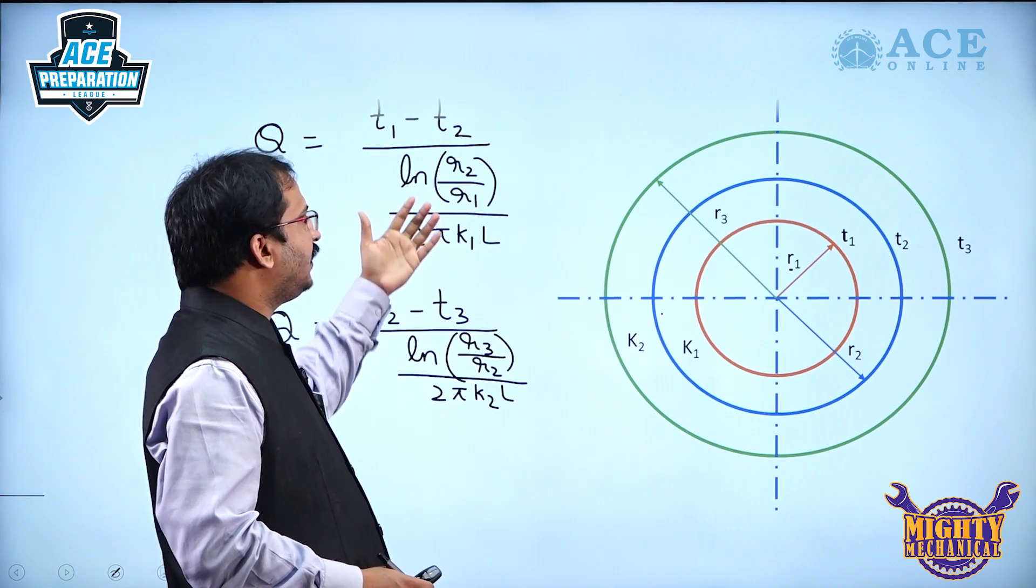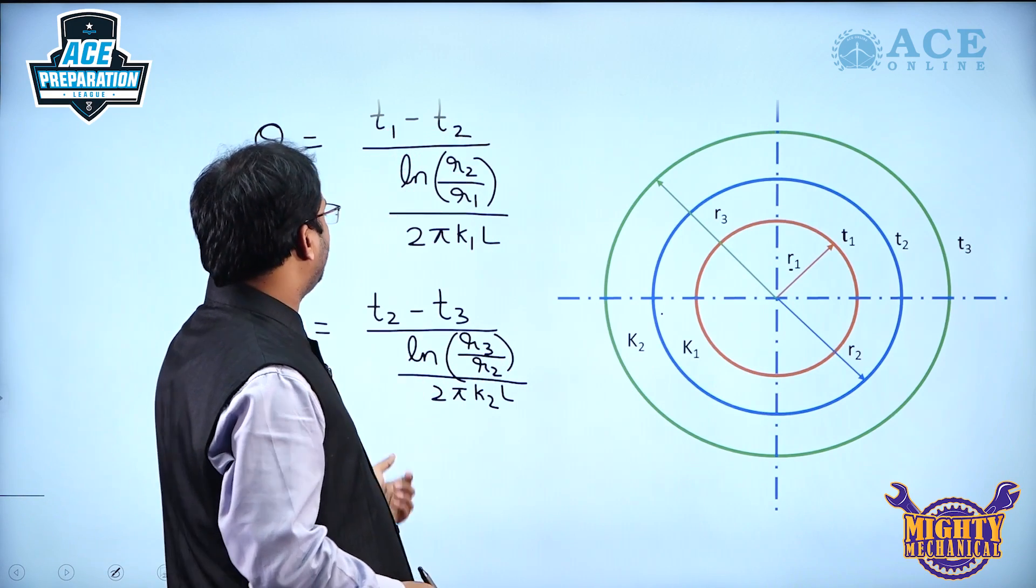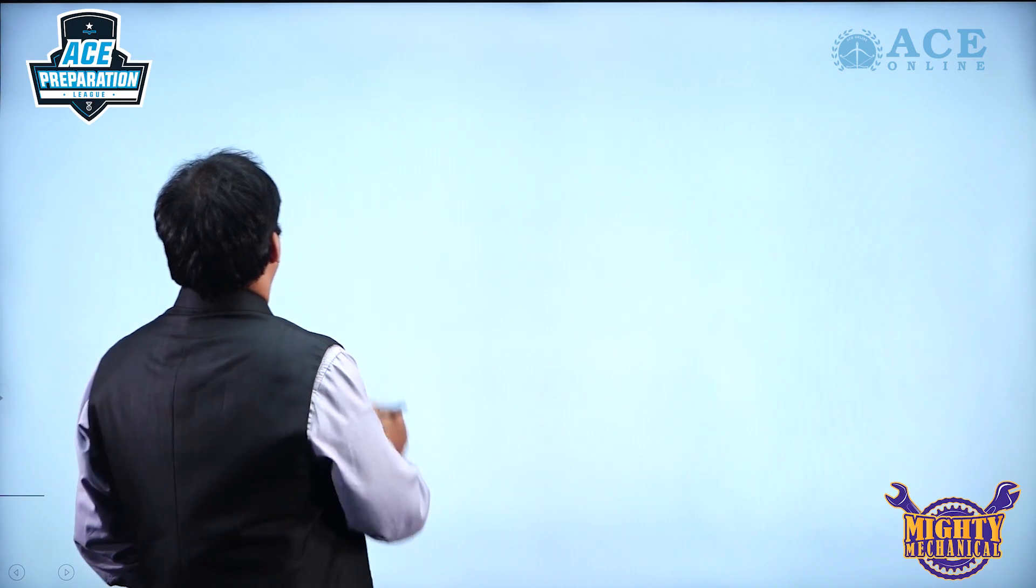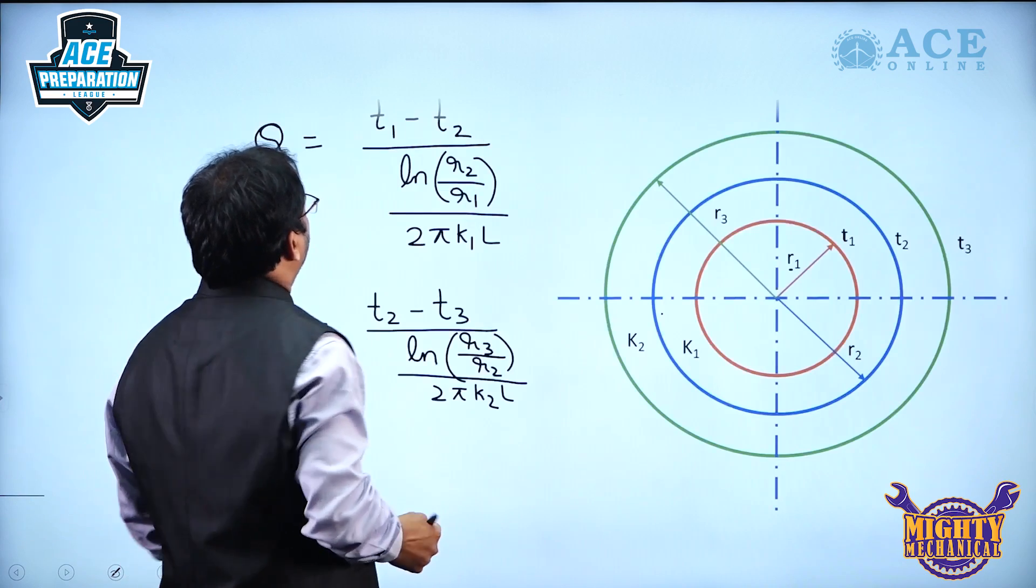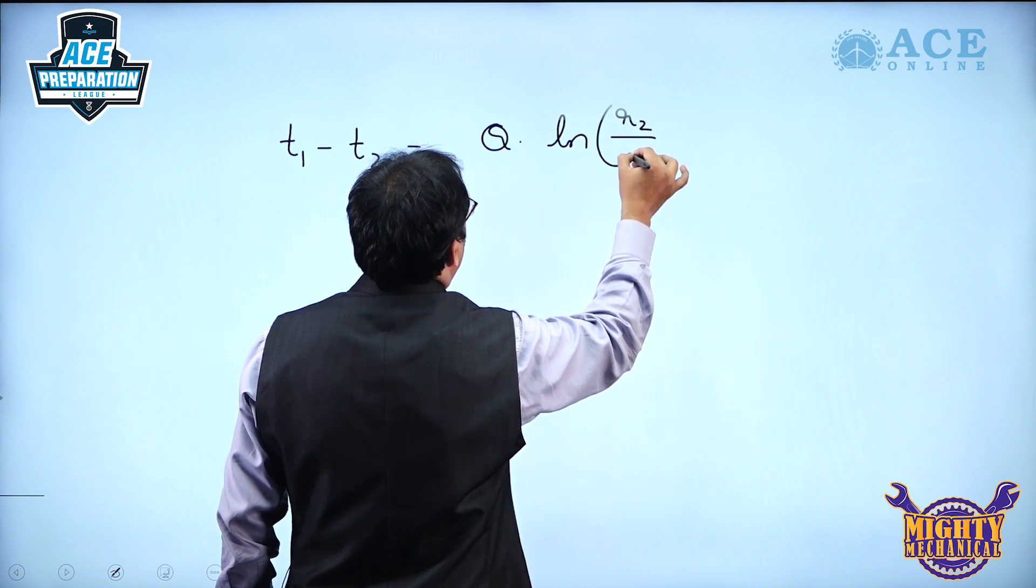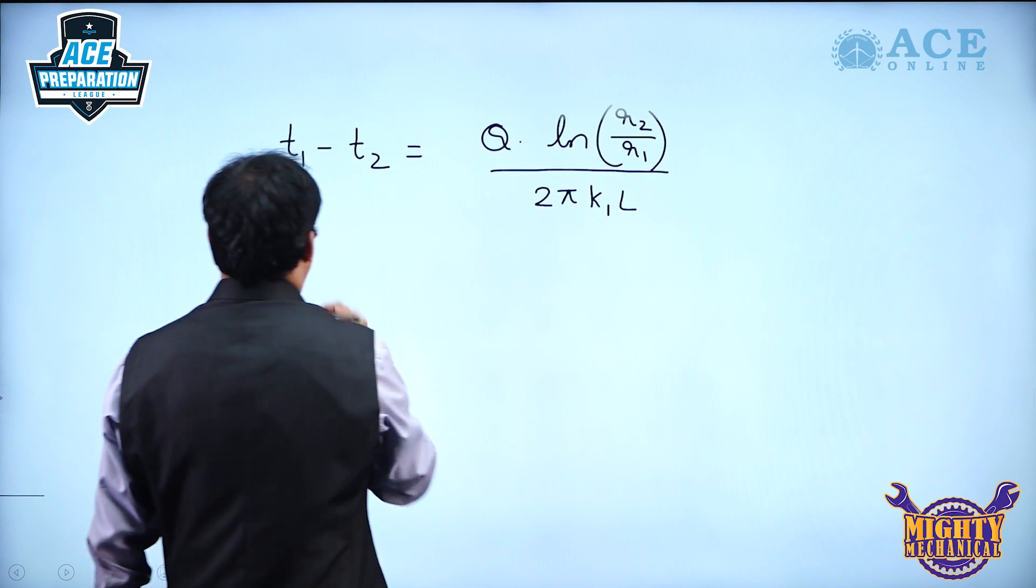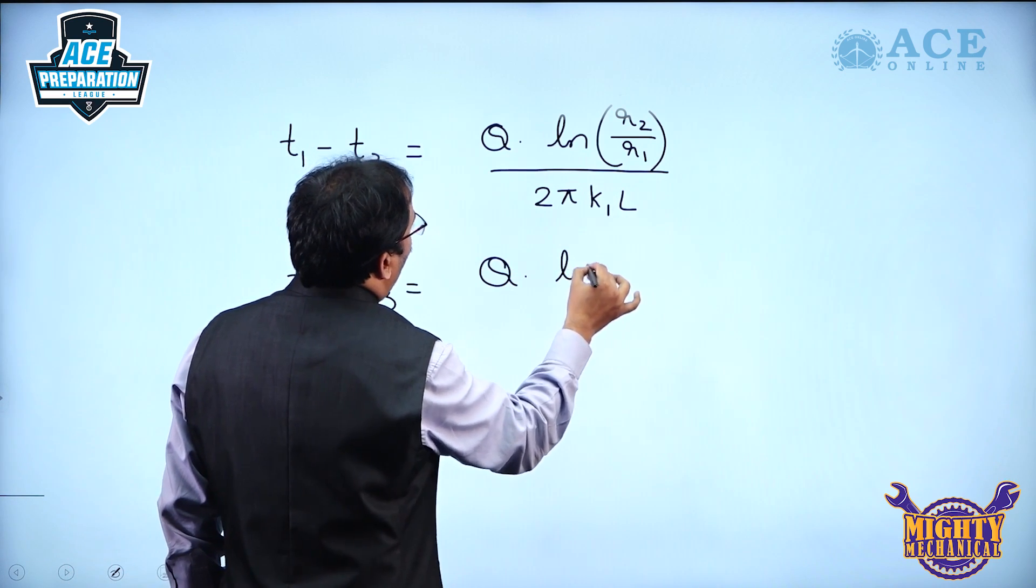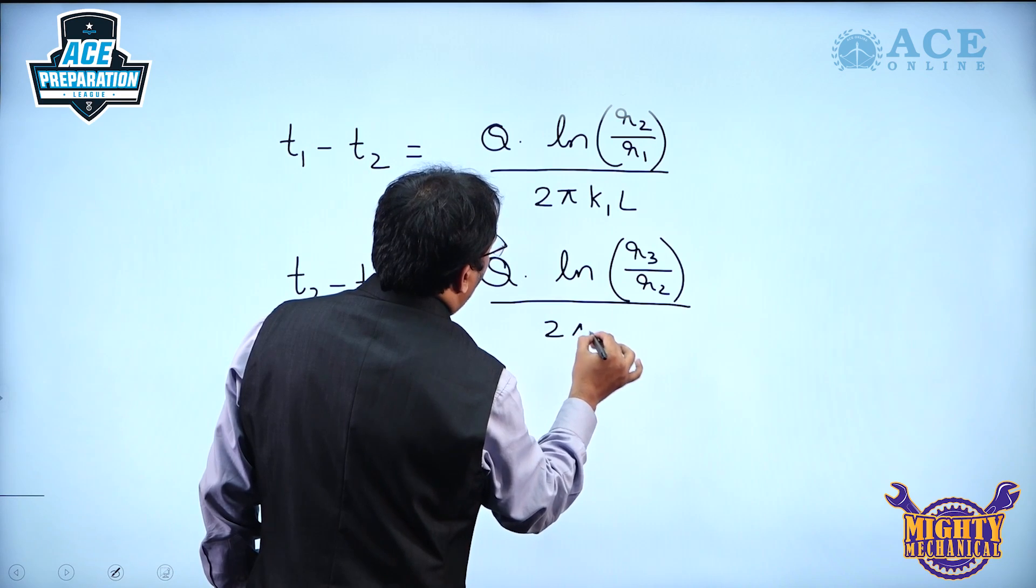Now our intention here is to determine the overall heat transfer. For that, let us take T1 minus T2 from this expression and T2 minus T3 from the second expression. T1 minus T2 will be Q into ln(R2/R1) by 2πK1L, and T2 minus T3 is equal to Q into ln(R3/R2) by 2πK2L.